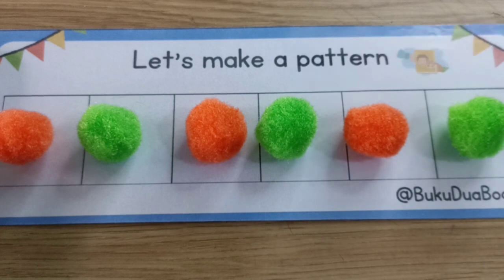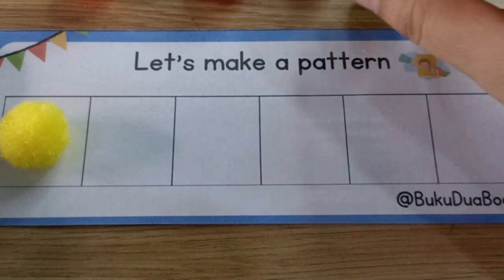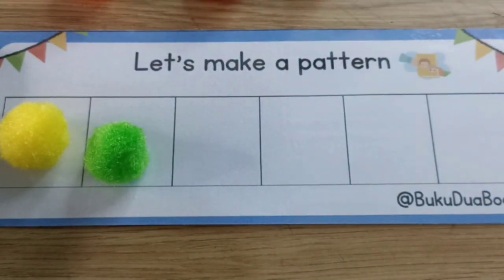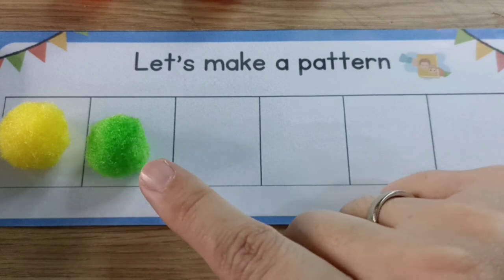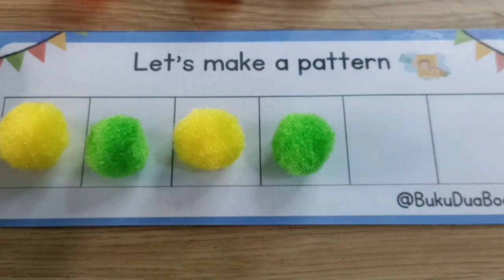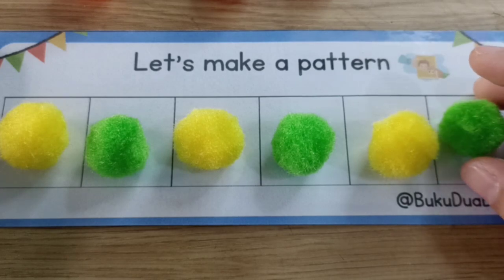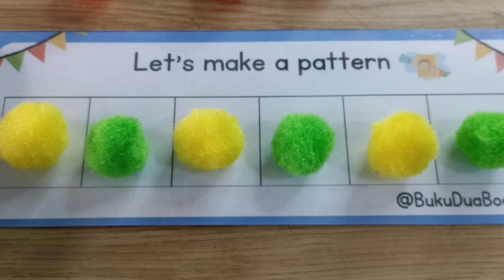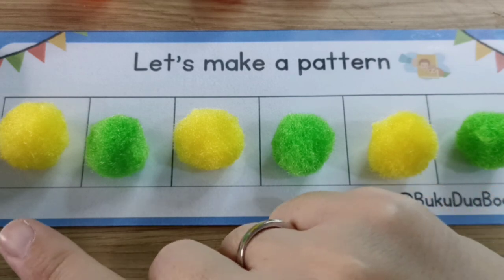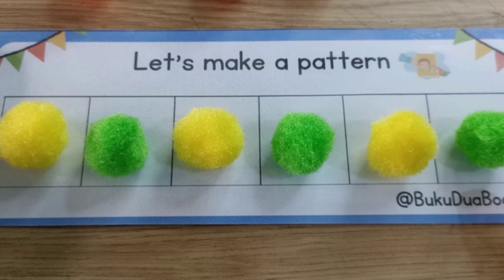Now the second pattern. Let's take yellow and green. Now let's continue this pattern. Yellow, green, yellow again, green, yellow, green, yellow, green. Yes! The second pattern. Now you may try. Yellow, green, yellow, green, yellow and green. That's good. Thank you, children.